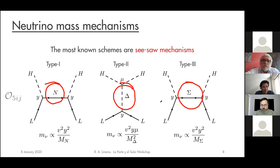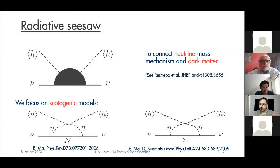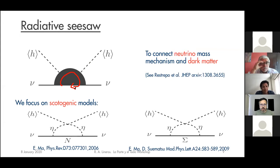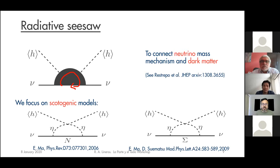Beyond the tree-level seesaw mechanisms, there are radiative seesaws in which neutrino masses are generated via loop corrections to the neutrino propagator. One subclass is the scotogenic model, which is a very elegant concept: to make the loop process dominant, you add a discrete Z₂ symmetry. The effect is that particles inside the loop are stable — and if there is a neutral particle inside the loop, it becomes a good dark matter candidate. This is the nice connection between dark matter and neutrinos in scotogenic models.